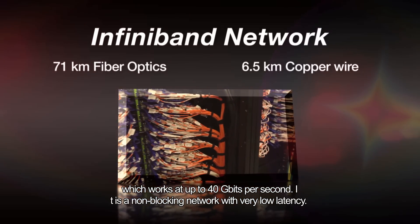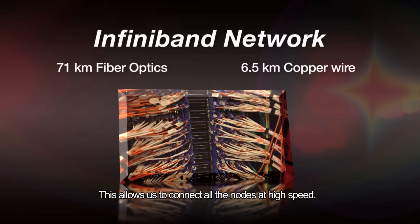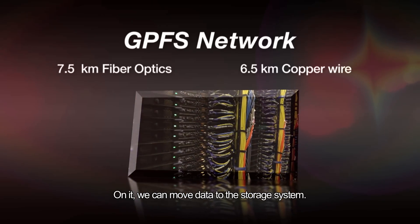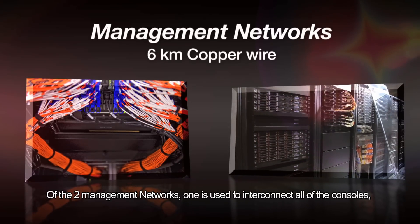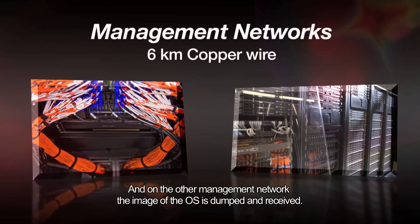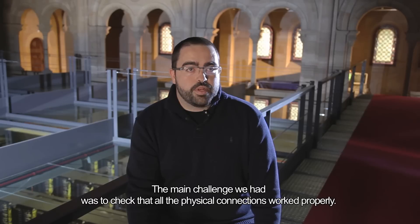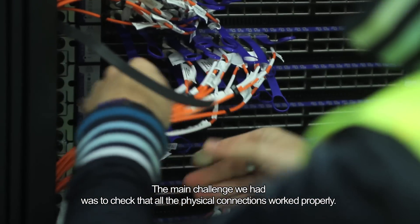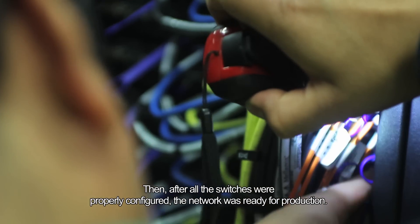One network operates at 40 gigabits per second — it is a non-blocking network with very low latency, allowing us to connect all nodes at high speed. Another network is where GPFS operates, allowing us to move data to the management system. There is also a network connecting all consoles where nodes are managed, and another network from which nodes can take their operating system image. The main challenge is first testing that all physical connections function correctly, and then, with switches properly configured, bringing the network into production.